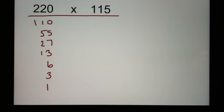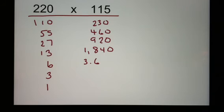115 doubled is 230. 230 doubled is 460. 460 doubled is 920. 920 doubled is 1,840. 1,840 doubled is 3,680. 3,680 doubled is 7,360. 7,360 doubled is 14,720.